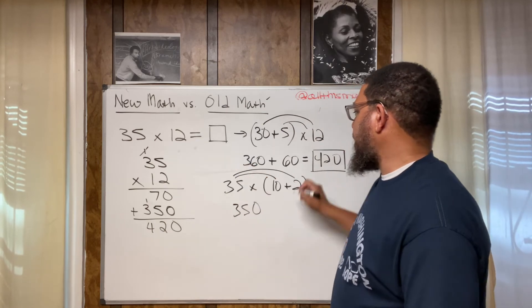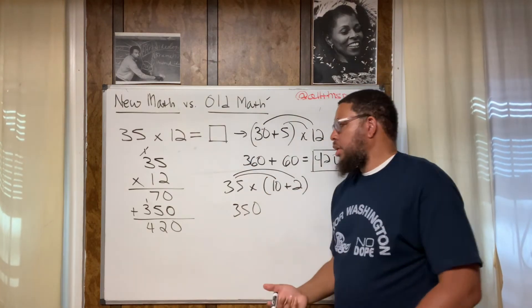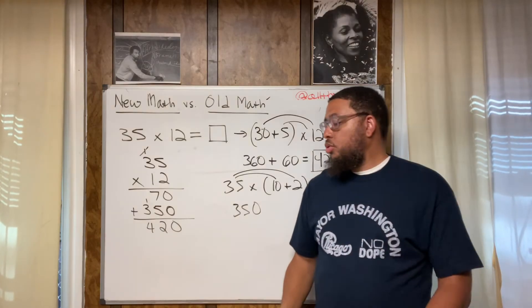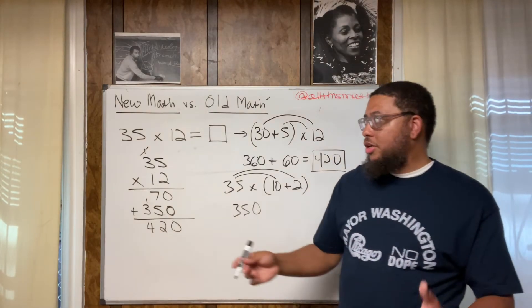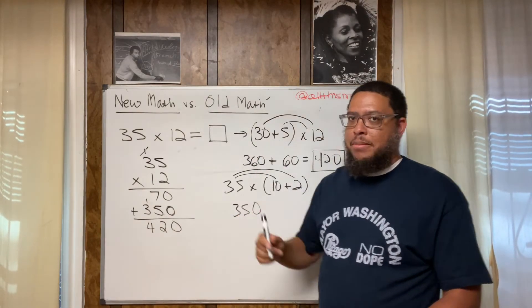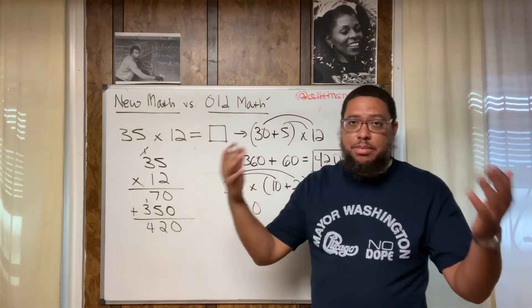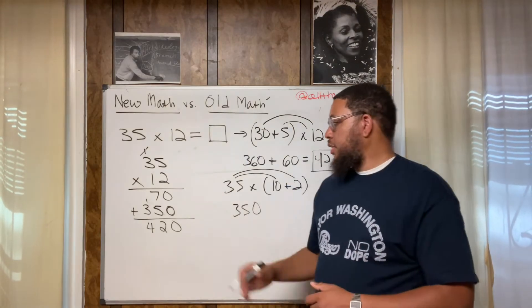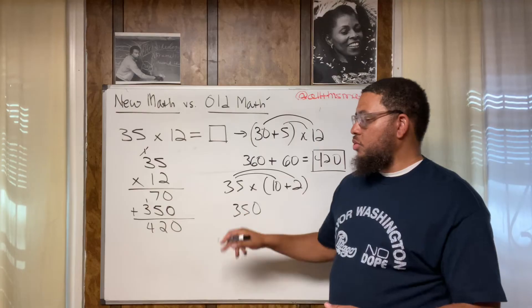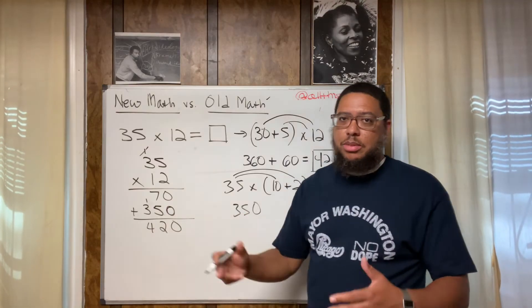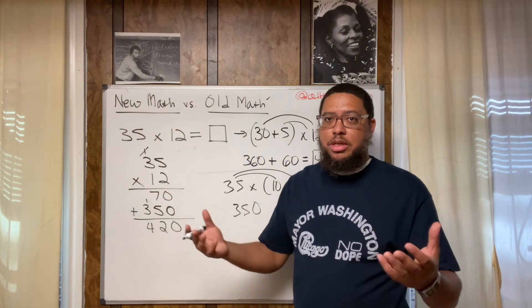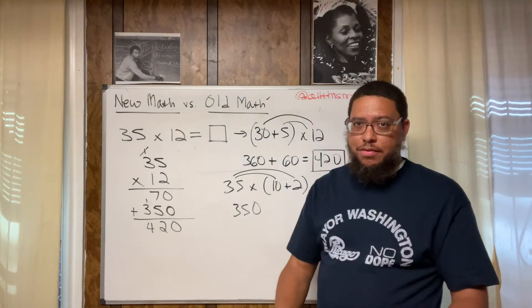And then we're going to do 35 times two. Now 35 times two could be a little tricky, but you could also break down 35 and decompose like we did up here. So if you don't know what 35 times two at the top of your head, that's cool. But just think about it as if it was 30 times two and five times two. So 30 times two is 60. Five times two is 10. What's 60 plus 10? Put them together, you get 70.